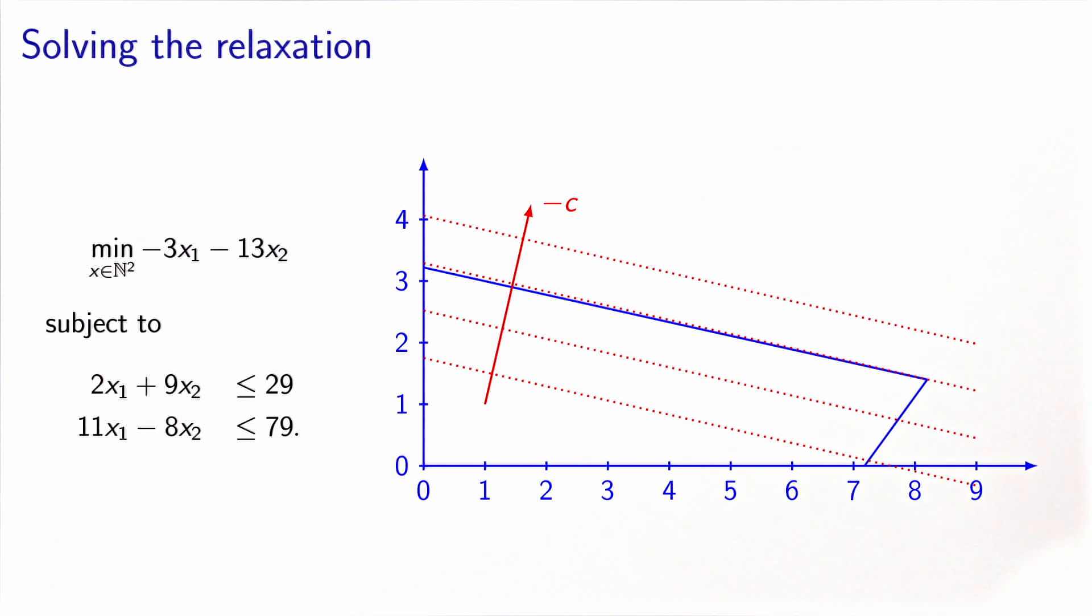So here, you can do it visually. So I have drawn the level lines of the objective function. Minus the gradient is in this direction. Therefore, the optimal solution is at this vertex of the polyhedron. So this is the optimal solution of the relaxation.